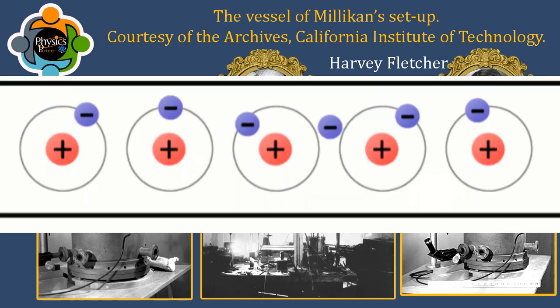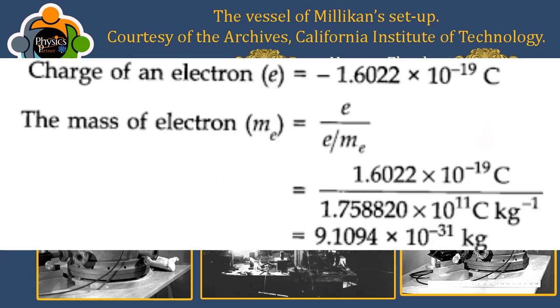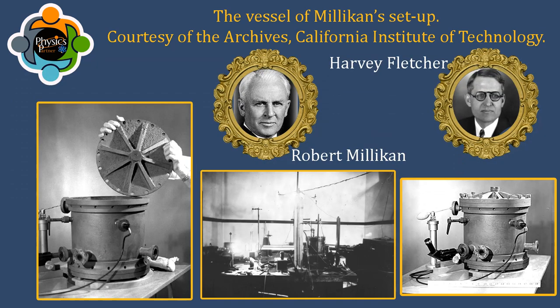The discovery of the charge and mass of the electron was an essential contribution to the development of atomic theory as it helped confirm the existence of subatomic particles. Millikan was awarded the Nobel Prize in Physics in 1923 for his contributions to the study of the electron.